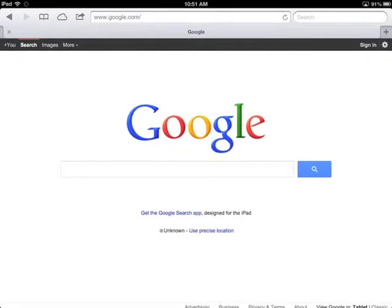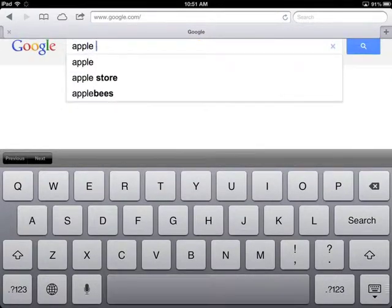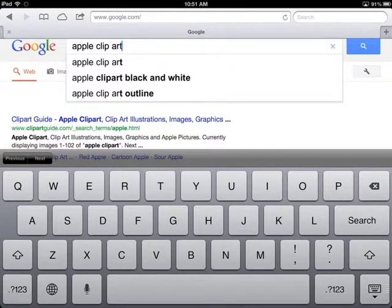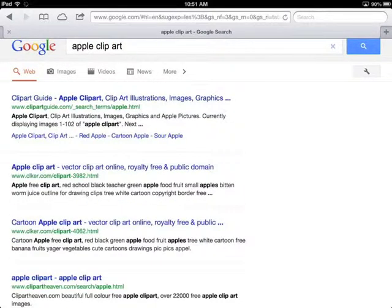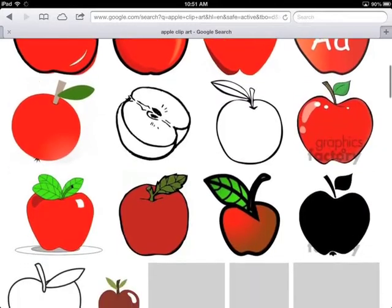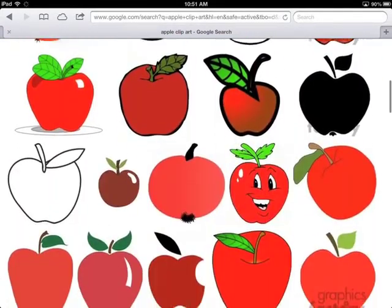So I've gone into Safari and I do just a regular Google search and I would do a search for whatever I'm looking for. In this case, apple followed by clip art. So I don't get pictures of real apples, I just get little clip art images. Once the Google search is done, click on the images results there at the top so that you're not getting web pages, you're actually getting pictures of apples.